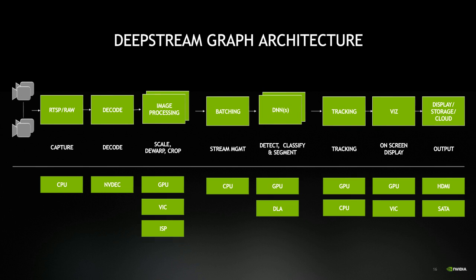Here is the DeepStream graph architecture — a typical IVA pipeline constructed with DeepStream. The first step is capturing streaming data from an RTSP stream, a file, or a USB/CSI camera. Next is decode: decoding is very compute-intensive, so we use NVDEC hardware-accelerated decode from NVIDIA hardware — separate from the CUDA cores on GPU, ensuring the full GPU is available for AI inferencing. After decoding, pre-processing may include image conversion, scaling, cropping, or de-warping for 360-degree camera streams. There are various hardware accelerators for these operations.